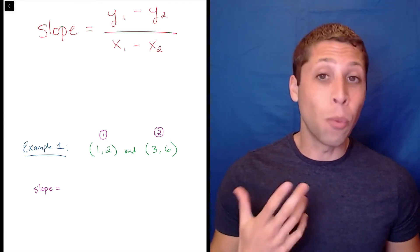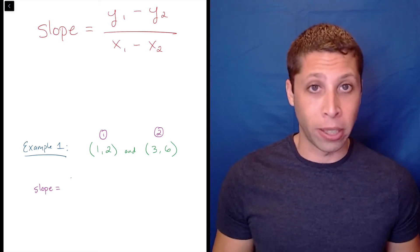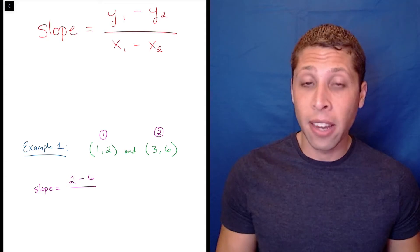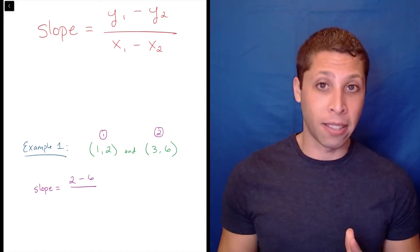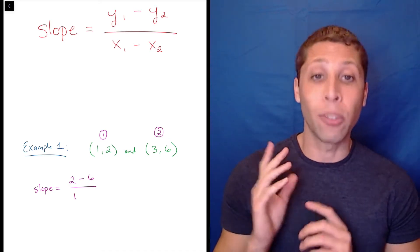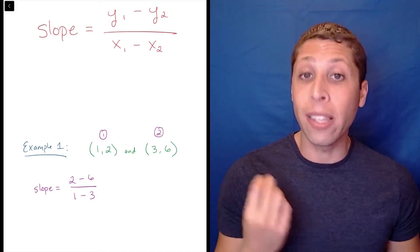y1 is the y-coordinate of the first point, which is 2, and y2 is the y-coordinate of the second point, which is 6. On the bottom, we need to be consistent. The first point still comes first, so our x1 is 1, and our x2 is 3.